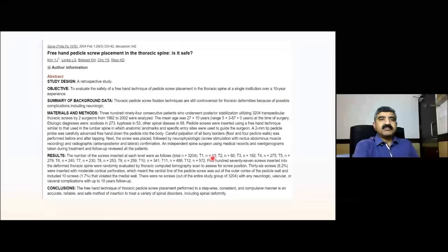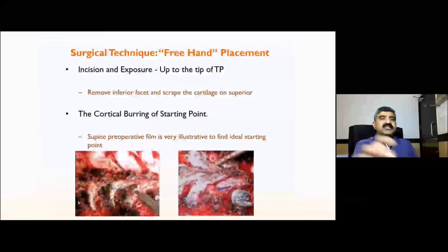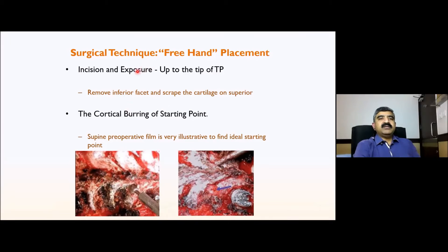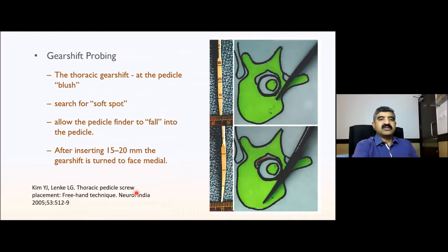This is a paper from Lenke describing freehand pedicle screw placement in the thoracic spine and how safe it is. The incision should be adequate and exposure should extend to the tip of the transverse process — the entire spinous process, lamina, facet joints, and tip of transverse process should be exposed. You can use a cortical burr to start and decorticate to expose the cortical blush.